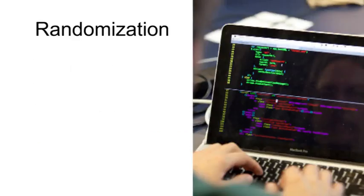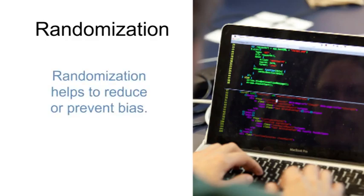When randomization is done, a computer or some other method is used to assign groups to receive one exposure or treatment or another. Randomization is done by chance and helps to reduce or prevent bias in a study. It is the most important component of the experimental study design.